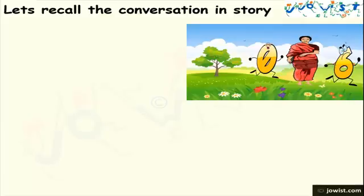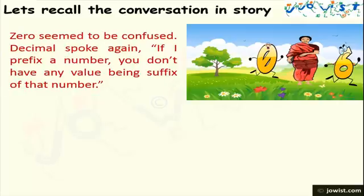Now, let's recall the story of zero and decimal. The conversation was, zero seemed to be confused. Decimal spoke again: if I prefix a number, you don't have any value being suffix of that number. Like the number 45.5 and the number 45.50 — zero is suffixed to the number 45.5. These two numbers are equal.